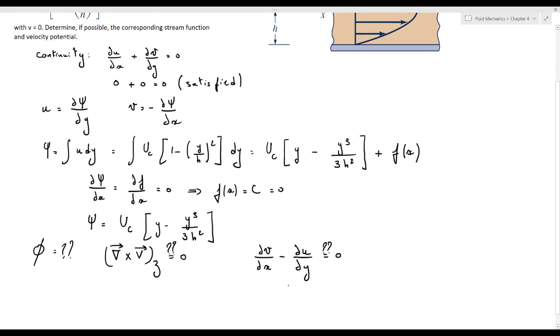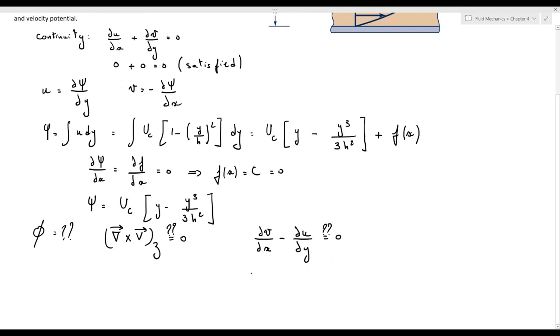So the curl of the velocity vector in the z direction is del v over del x minus del u over del y. So here the rotation is about the z axis. Del v over del x is 0, and del u over del y is uc into 0 minus 2y over h squared, which is equal to minus 2y uc over h squared, which is not equal to 0.